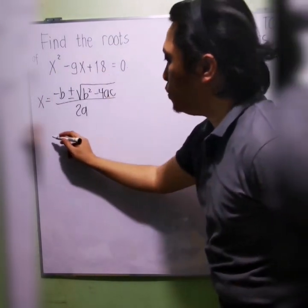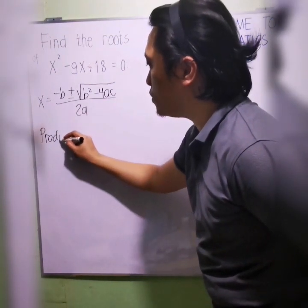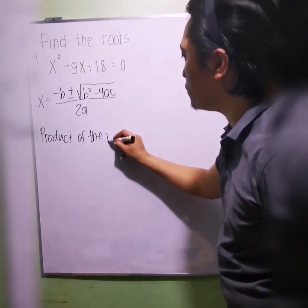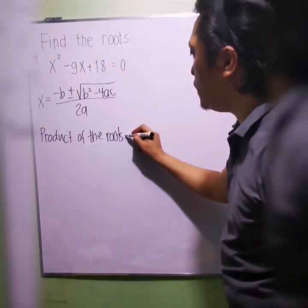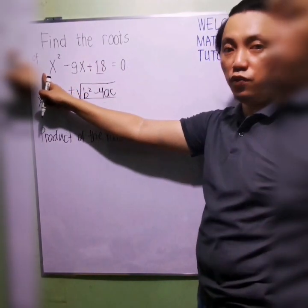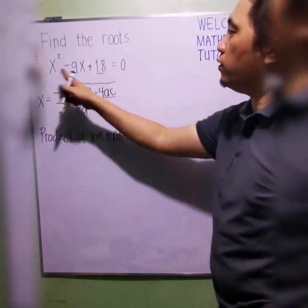From the equation, we will know that the product of the roots is equal to 18, right? Since our first term has a coefficient of 1, this is 18 over 1, so 18.